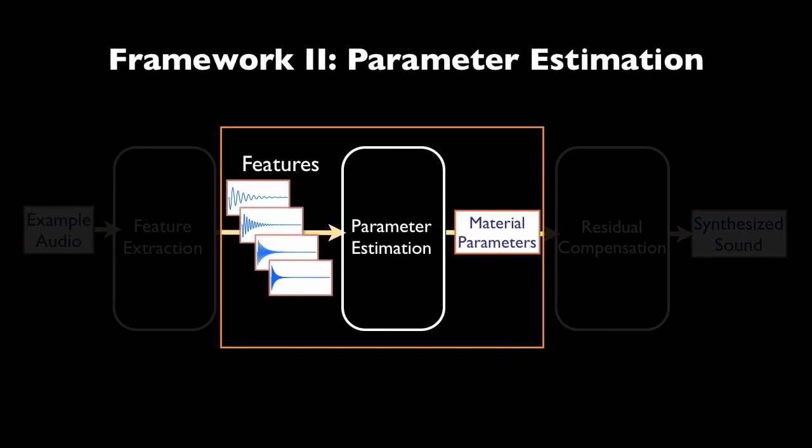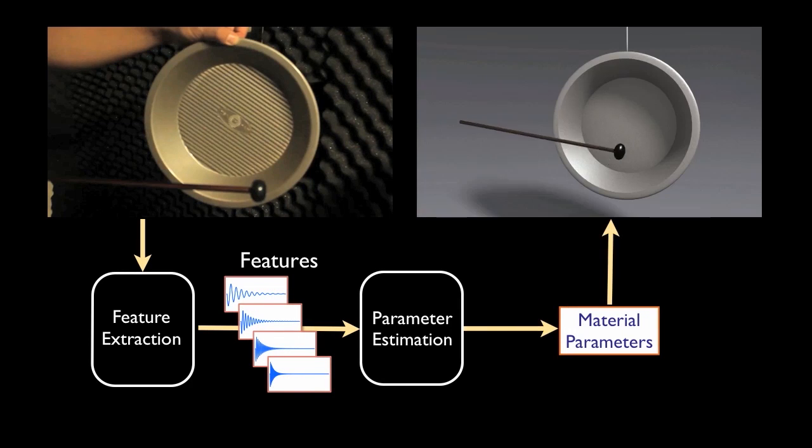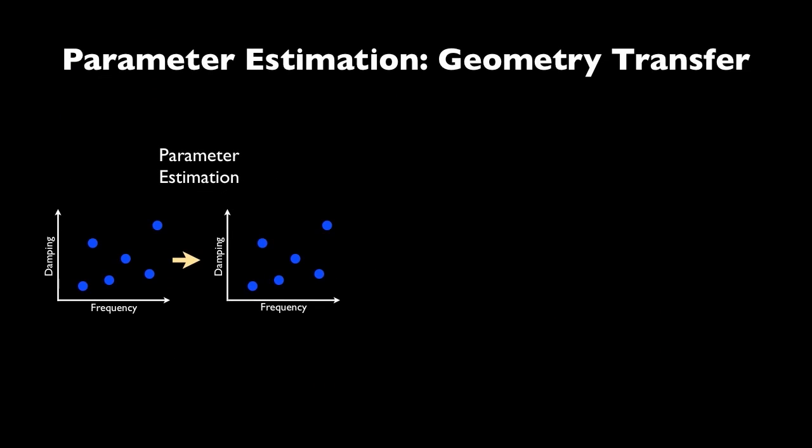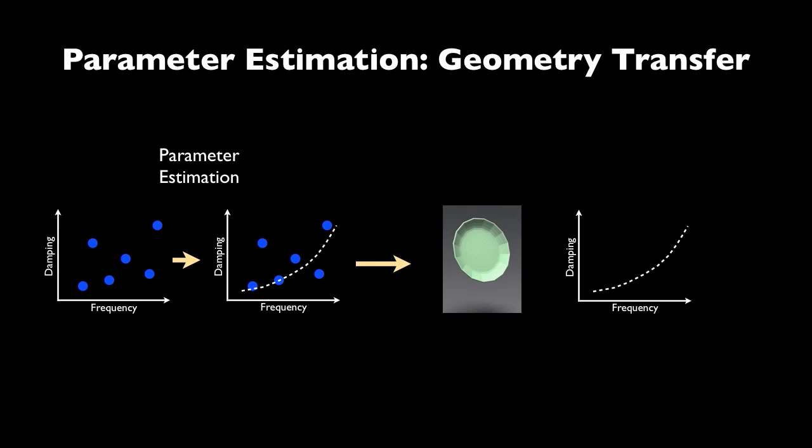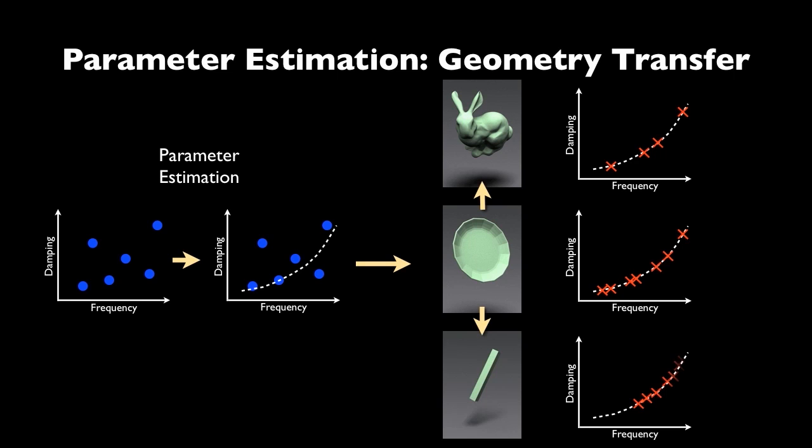Now we show the parameter estimation results. Extracted features guide parameter estimation. Notice the material parameters define a circle in the frequency damping space. Together with the virtual geometry, modes for these sounding objects are determined. When we apply the same material parameters to a different shape, the modes transfer automatically with the new geometry.